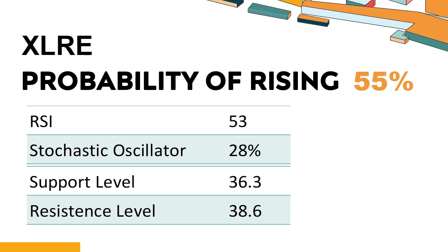How is XLRE performed according to technical data? XLRE's 14-Day Relative Strength Index (RSI) value was 53. When the RSI is between 50 and 70, it generally indicates that the stock is moderately bullish, meaning the securities price has been rising but has not yet reached overbought levels. The current stochastic oscillator of XLRE is 28%.